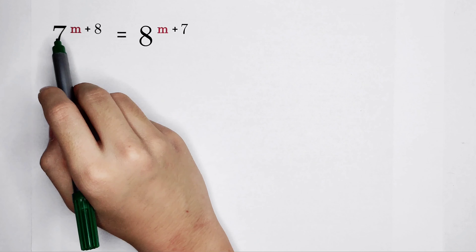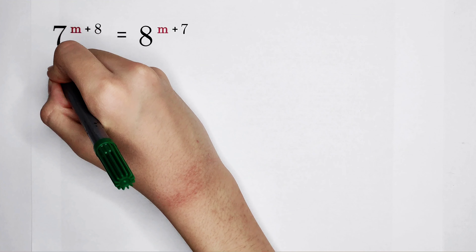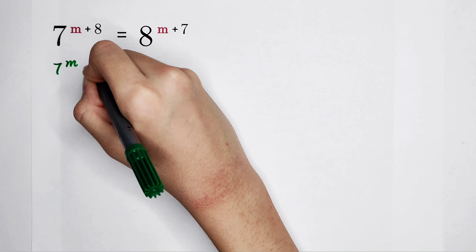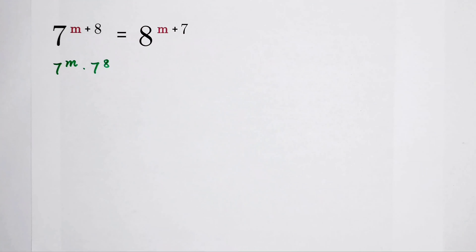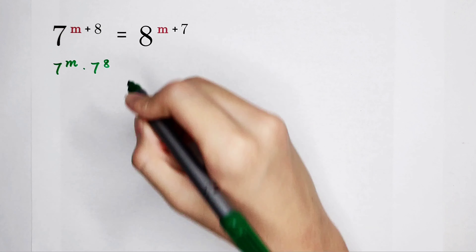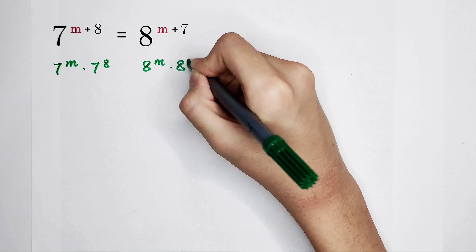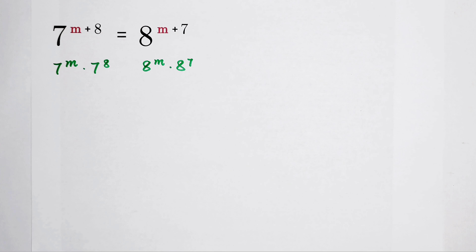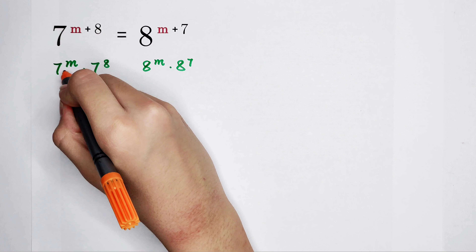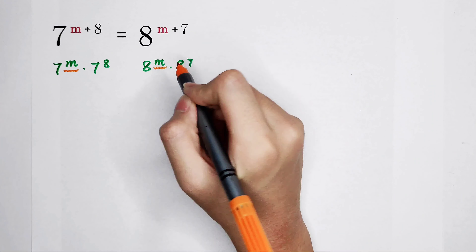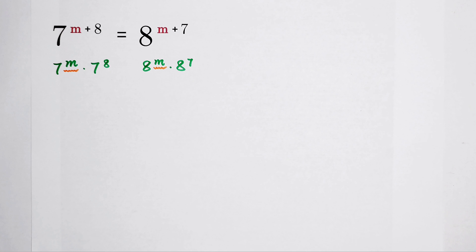Now, 7 to the power of m plus 8 is 7 to the power of m, times 7, times 8 — that's the left-hand side. On the right-hand side, 8 to the power of m times 8 to the power of 7.